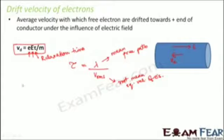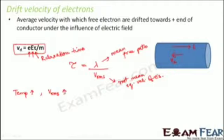As temperature increases, the rms velocity also increases and as a result the relaxation time reduces. So as temperature increases, rms velocity increases because the mobility of the particles increases. This means the velocity of electrons also increases, and since they are inversely proportional, tau decreases. That was about the relaxation time tau.